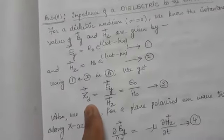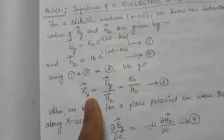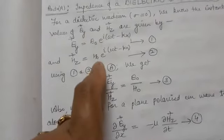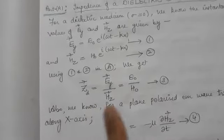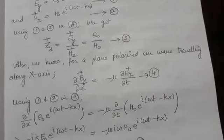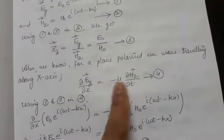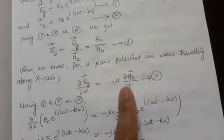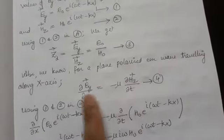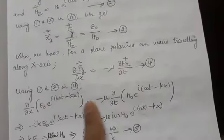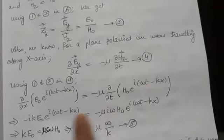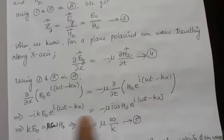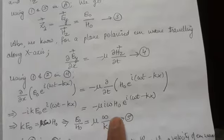Using these two equations in equation A, I get ZD — the characteristic impedance — as EY / HZ, which gives E₀ / H₀. This is the meaning of the impedance offered by a dielectric to the incoming electromagnetic wave. Now, for the plane polarized electromagnetic wave traveling along the x-axis, we have already derived the relation between spatial variation of electric field and time variation of magnetic field — equation 4. Using equations 1, 2, and 4, and after differentiation and canceling the exponential term, we get E₀ / H₀ = μω / K.